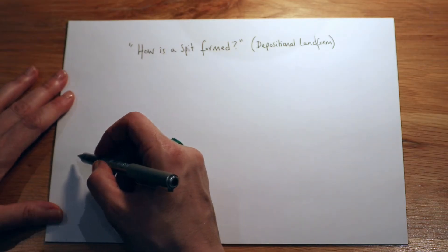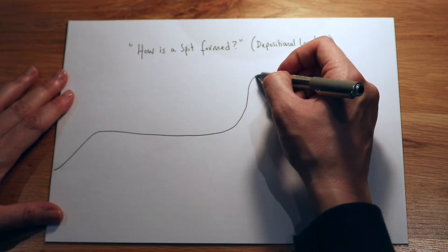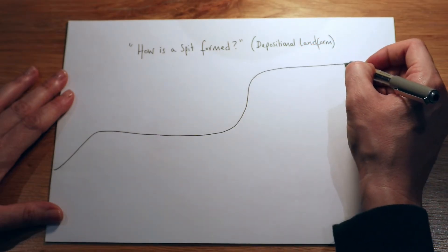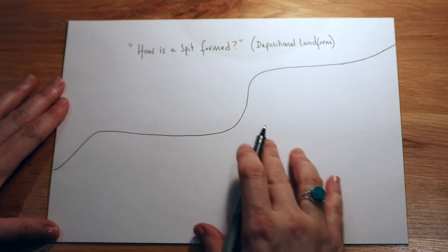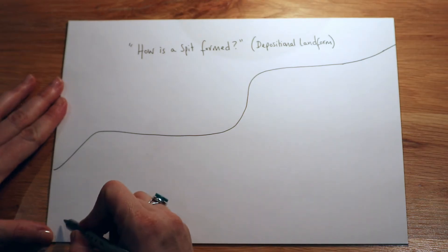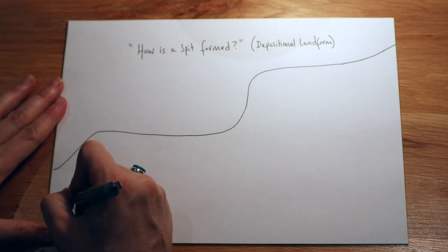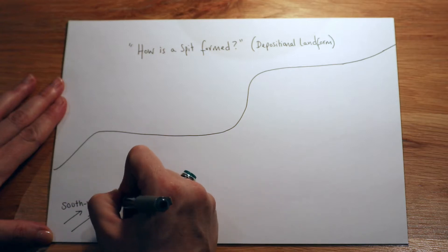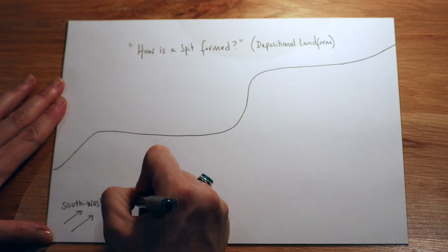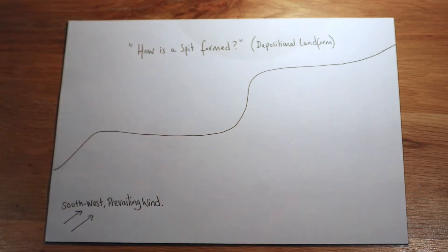If we start by drawing our coastline — remember it needs to have a change in the shape of the land. What dictates what happens on our shores to start with is the wind direction. As we know in the UK, the wind comes from the southwest. This is what we call the prevailing wind — the one that happens most of the time due to the global air circulation model where most of our weather comes from.